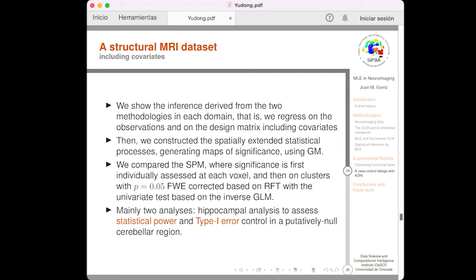We show, in this part, the inference derived from the two methodologies in each domain. So, the SPM and the support vector regression. We construct the spatially standard statistical processes, generating maps of significance using grey matter volumes. And we compare the SPM, the univariate SPM, where significance is first individually assessed at each voxel and then unclustered with P family-wise error correction based on random field theory. We perform mainly two analyses. Hippocampal analysis to assess statistical power, assuming that the hippocampus is a positive region in Alzheimer's disease. And another analysis, the type 1 error control, in a putatively null cerebral region, assuming that the cerebellum is a negative region in Alzheimer's disease.